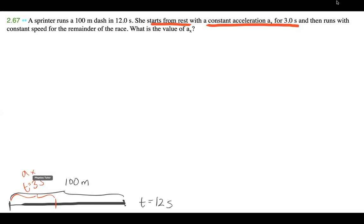That means for this remainder portion, she's going to be running at this constant speed. So let's go ahead and write down all of our givens now that we understand the problem a little bit better with the diagram.